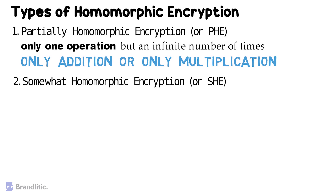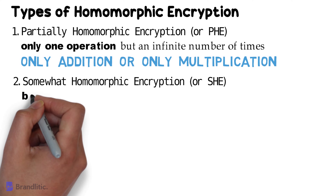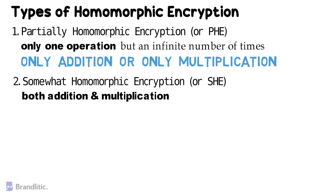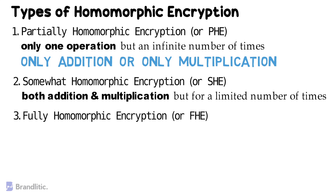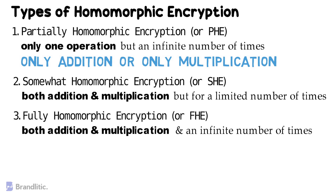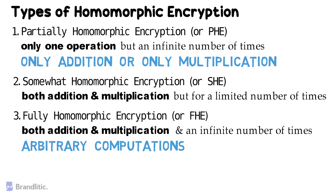Second, Somewhat Homomorphic Encryption, or SHE, which allows both addition and multiplication to be performed, with this limitation evaluated to a certain depth in the circuit logic. Third, Fully Homomorphic Encryption, or FHE, which allows both addition and multiplication to be performed on the ciphertext an infinite number of times, and it also supports arbitrary computations on the encrypted data.